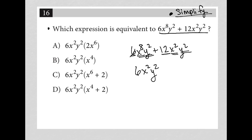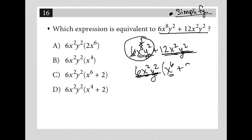So there's my GCF. Now what would go inside the parentheses? What would I need to multiply 6x squared y squared by to recreate the first term? That would be x to the sixth — x squared times x to the sixth gives me x to the eighth, and the y squared is already taken care of. Then for the plus sign: what do I multiply 6x squared y squared by to recreate 12x squared y squared? That's just 2, because 6 times 2 gives me 12, and the x squared and y squared are in the GCF. So: x to the sixth plus 2.